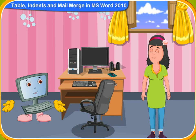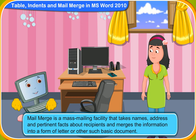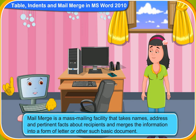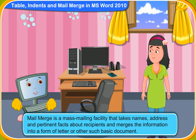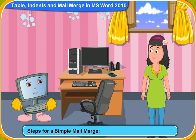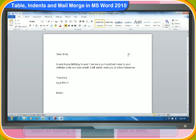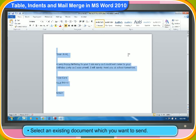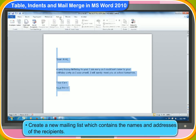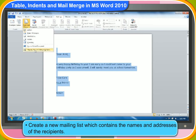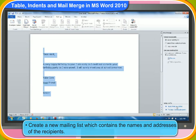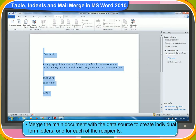Remy, do you know how you can merge mails in MS Word? No idea, Klikov. Mail merge is a mass mailing facility that takes names, addresses, and pertinent facts about recipients and merges the information into a form letter or other similar document. These are the steps for a simple mail merge. First, select an existing document which you want to send. Now, create a new mailing list which contains the names and addresses of the recipients you wish to send the letter to. Finally, merge the main document with the data source to create individual form letters, one for each of the recipients.